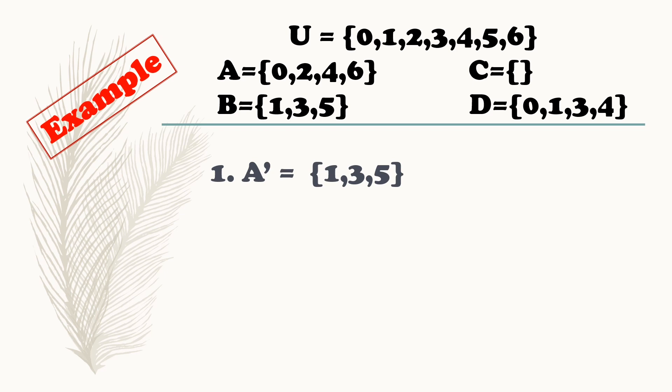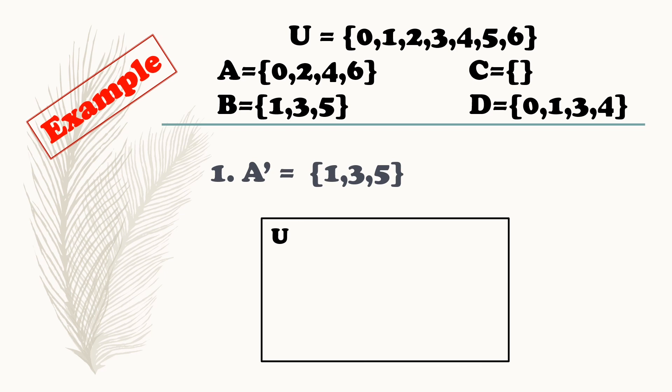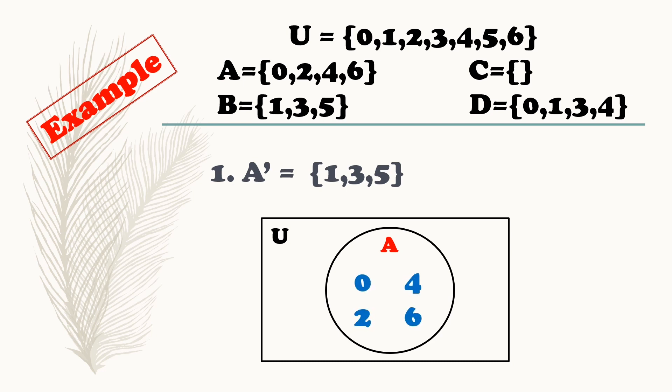How can we represent this into a Venn diagram? Sa universal set, yung nasa loob ng bilog natin ay set A. Ano-ano ba yung lahat ng elements ni set A? 0, 2, 4, 6. Lahat ng elements na wala sa set A, siya yung nasa labas ng bilog natin. Siya yung tinatawag nating complement of set A. So ano-ano yung elements? 1, 3, 5.